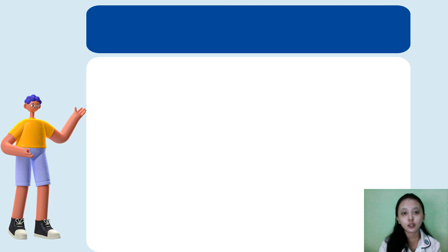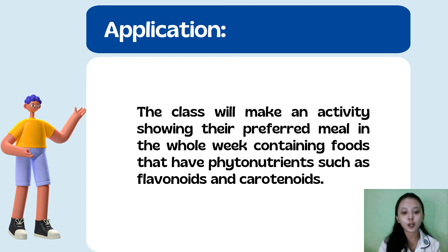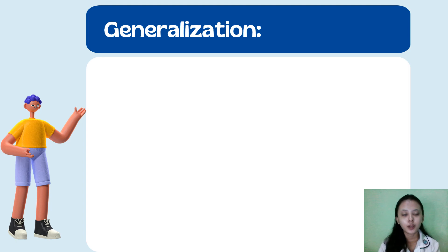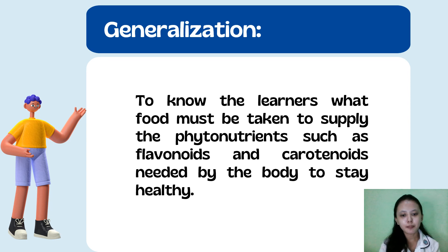That ends my presentation. Do you have any questions? If none, we are going to proceed to our application part. For the application, you will make an activity showing your preferred meal for the whole week containing foods that have phytonutrients such as flavonoids and carotenoids. Is that clear, class? So, for the generalization — you, the learners, must know what food must be taken to supply the phytonutrients such as flavonoids and carotenoids needed by the body to stay healthy.